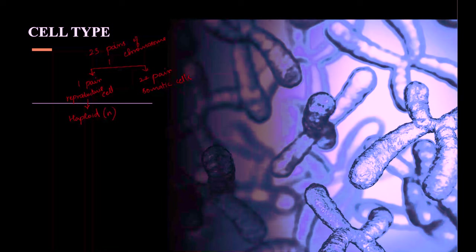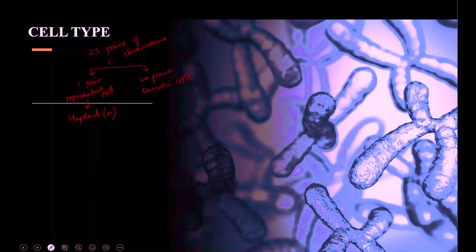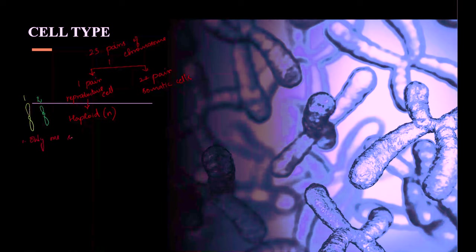This haploid cell consists of only one set of chromosomes. It is formed after meiosis, which is a type of cell division we are going to look into.